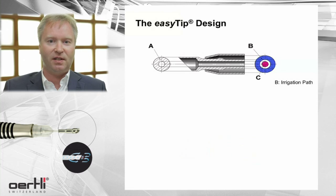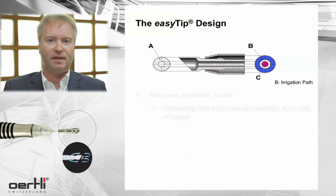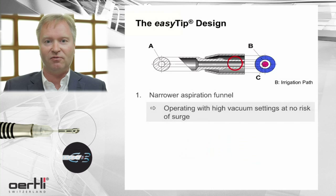With EasyFACO, the main change lies in the new design of the FACO tip. The design of the FACO tip has been changed mainly in three ways. First, the aspiration funnel has been made narrower, and this, according to Hagen-Poiseuille's law, gives you the chance of enhancing the resistance of flow in the event of an occlusion break.